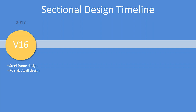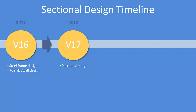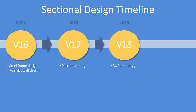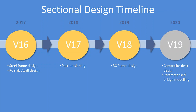Sectional design has been the major change over the last two years. Version 16 delivered a totally new way of delivering design for steel frames, along with improved reinforced concrete slab and wall design. Version 17 was largely about post-tensioning — new tools for inserting and managing tendons, and creep and time-stage management. Version 18 is essentially about RC frame design. In version 19 we're extending that to a new composite deck design utility, valid for more than just the Eurocode, featuring a new parameterized bridge modelling tool.